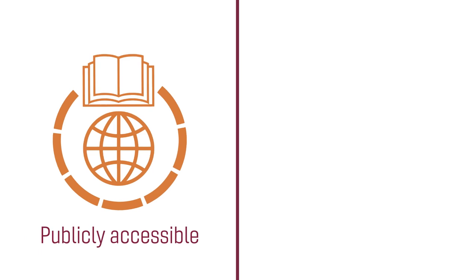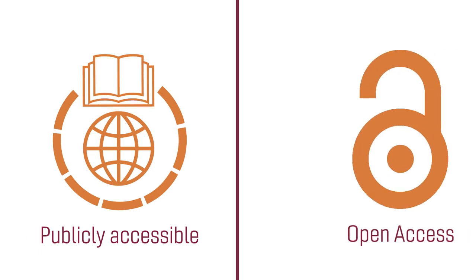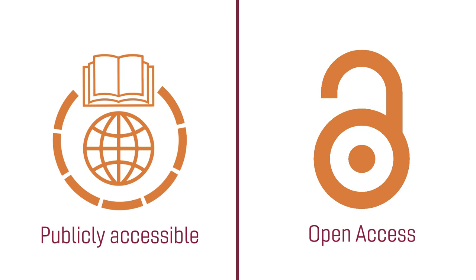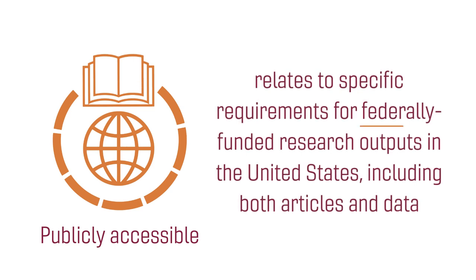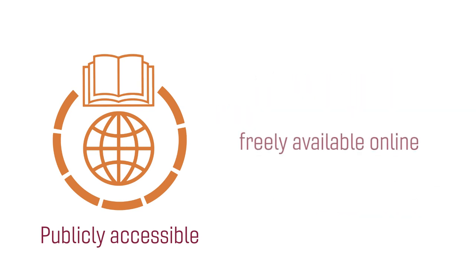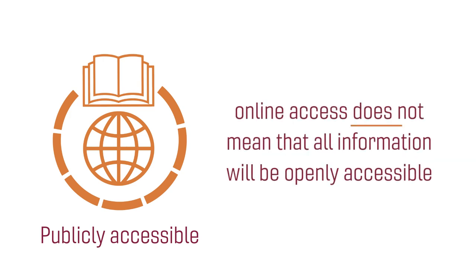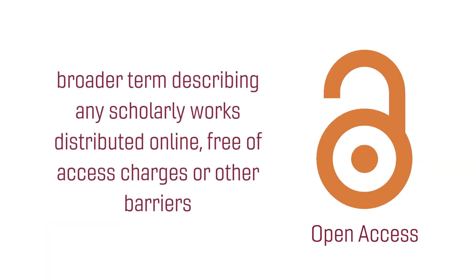What does it mean for research to be publicly accessible, and how does this differ from open access research? The term 'publicly accessible research' relates to specific requirements for federally funded research outputs in the United States, including both articles and data. Publicly accessible research is freely available and provides for an online access mechanism, though online access does not mean all research will be openly accessible — there could be a vetting process for secured or sensitive information. In contrast, open access is a broader term describing any scholarly works distributed online free of access charges or other barriers.